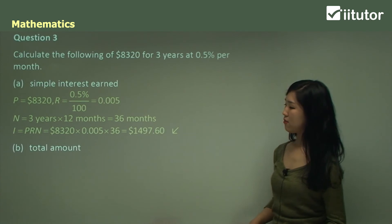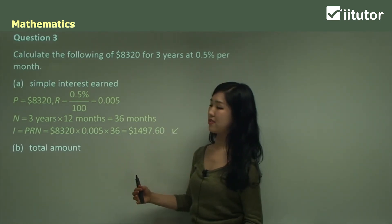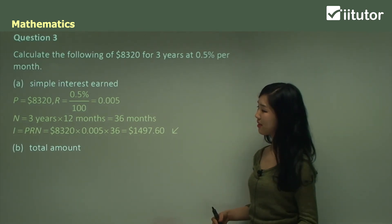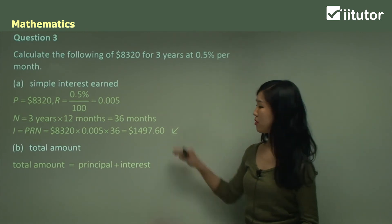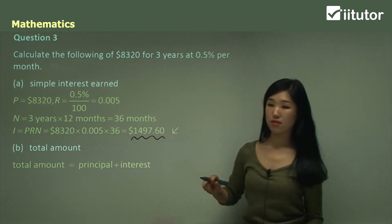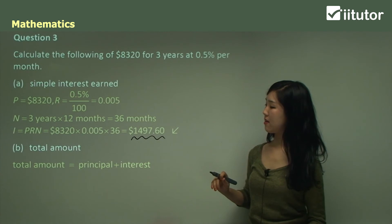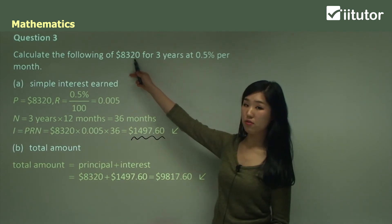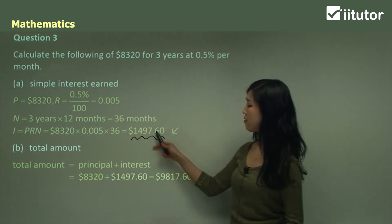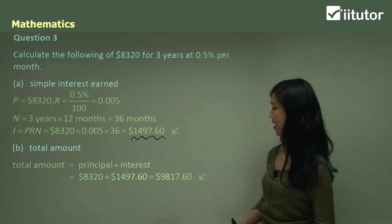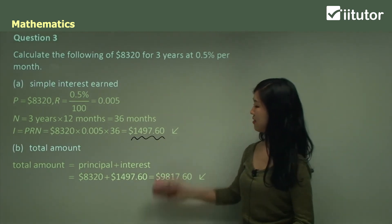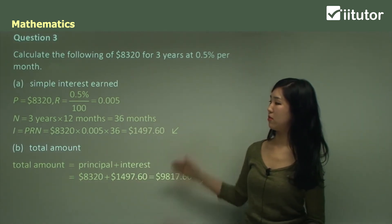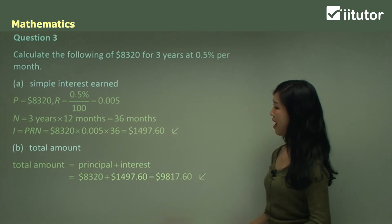For part B, the total amount: total amount is principal plus interest. Take the interest calculated in part A and add the principal of $8,320. Add them together and that's your total amount.